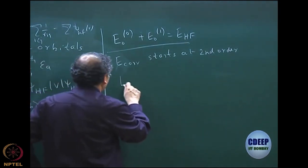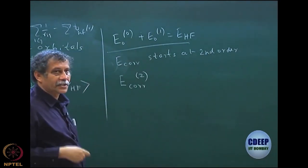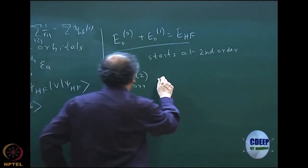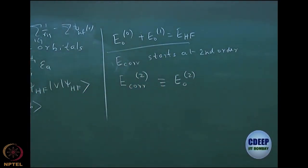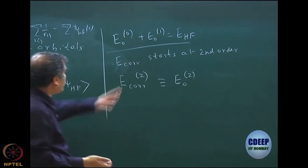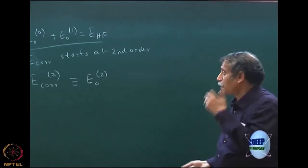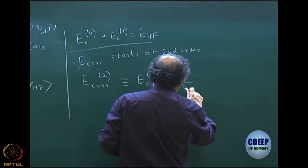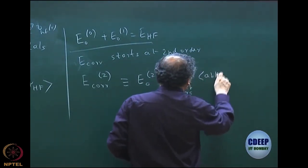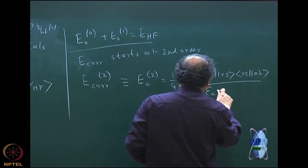We went through the second-order perturbation equation and wrote an expression for the correlation energy, which is the correction at second order — you can also call it E⁰₂. E⁰₂ is the first correlation energy contribution, which starts at second order, because at E⁰₁ there may be a value but that just adds up to Hartree-Fock. The expression is one-quarter times the sum over AB and RS, where RS are virtual orbitals and AB are occupied orbitals.